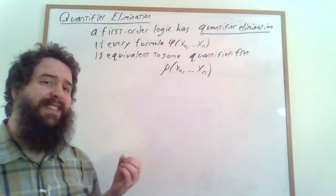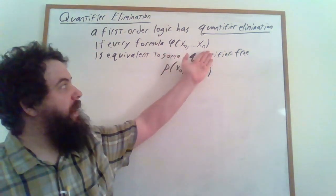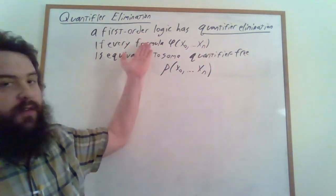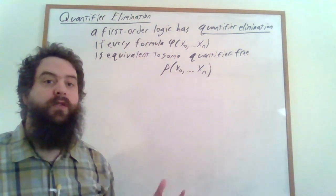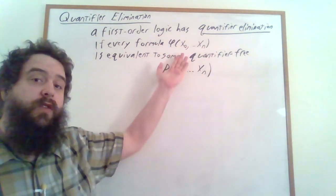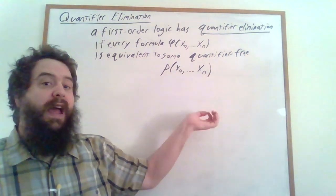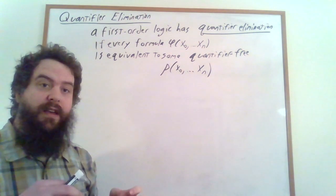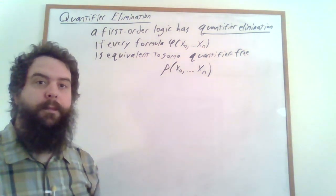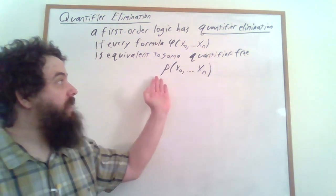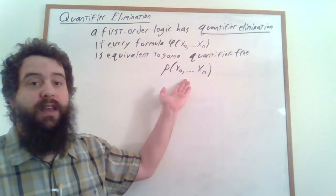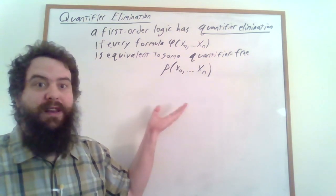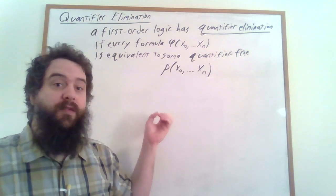It also gives us a really good handle on what we can say in this particular logic. If we have some sort of predicate — some sort of property that's true of some tuple of elements of our structure — and that property is some sort of first-order logical formula, we can use the quantifier elimination procedure to reduce that formula down to a quantifier-free formula. And it's much easier to analyze what sorts of quantifier-free formulas we can build up out of the most basic atomic formulas, combining them using Boolean logic, especially in light of disjunctive normal form. It's the or of a bunch of ands of basic atomic formulas and their negations.